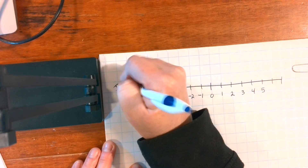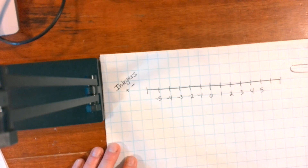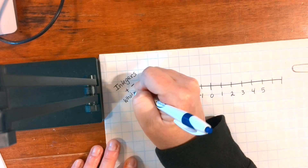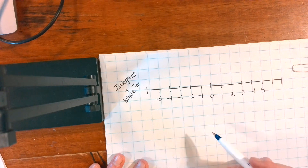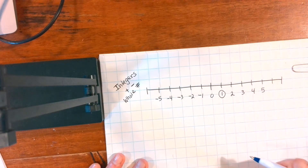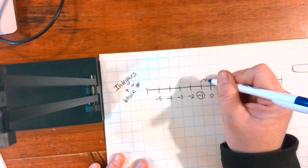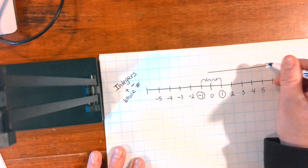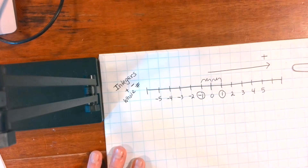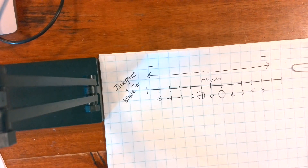Positive and negative numbers are called integers — that's the fancy mathematical word for it. Integers are all the positive and negative whole numbers: no decimals, no fractions. They're always exactly the same distance from zero. So the opposite of one is negative one, and it is exactly the same distance from zero. If we count right we are getting bigger, and if we count left from zero we're getting smaller.